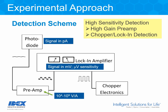Our detection scheme employs a high-gain preamp and phase-lock detection — in other words, a lock-in amplifier with a chopper reference signal. Our detector is a silicon photodiode. Typical photocurrents are picoamps or higher. The photocurrent is passed through a trans-impedance amplifier and boosted by a gain of 10⁴ to 10⁹ volts per amp. The boosted signal goes to the input channel of the lock-in amplifier, and the chopper electronics put out a reference signal that drives the reference channel.